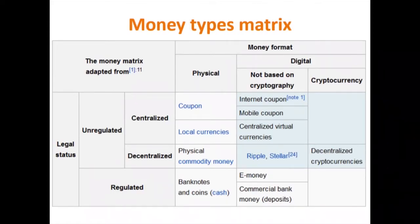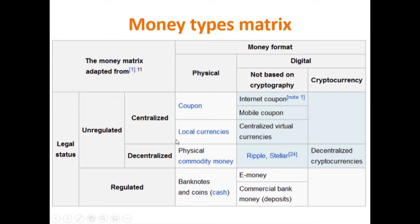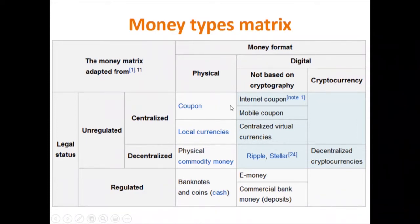This matrix from the European Central Bank is a taxonomy of currency types, divided by legal status and money form. Regulated currencies can be physical — bank loans, coins, cash — or digital, like electronic money or bank deposits. Unregulated currencies include centralized ones like vouchers, coupons, and local currencies, as well as centralized digital currencies not based on cryptography, such as electronic vouchers or centralized virtual currencies — which is our topic today.